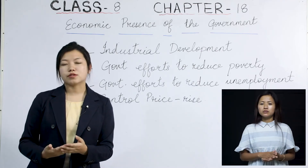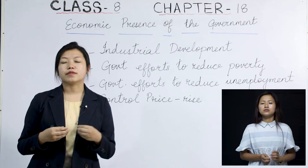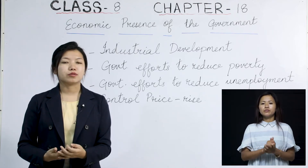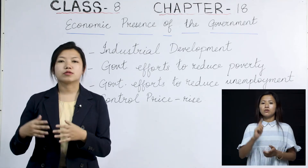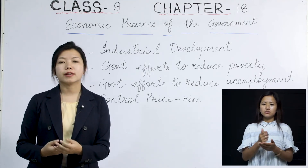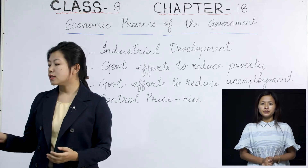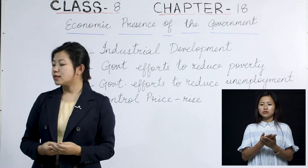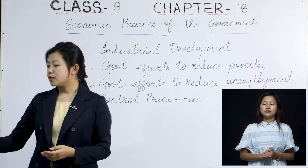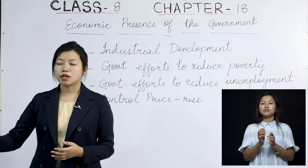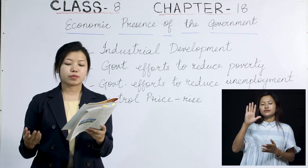After completing free training, youths can start their own business using their skills. For example, someone who learned weaving through the free training course can weave goods and sell them in the market to earn money. Another scheme is the Employment Assurance Scheme, launched in 1994, especially to help the backward classes of the country. There is also the Prime Minister's Integrated Urban Poverty Eradication Program, implemented in 1995, which aims to provide employment to the urban poor and covers 345 towns.